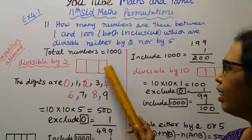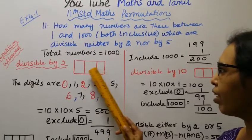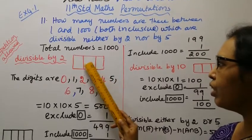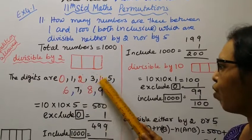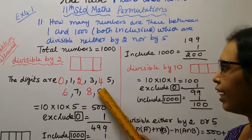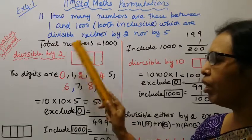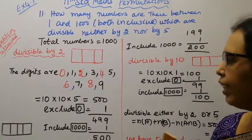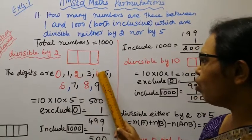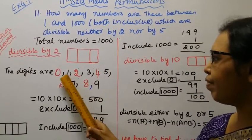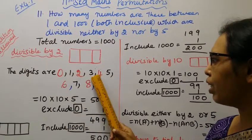Divisible by 2. The digits are 0, 1, 2, 3, 4, 5, 6, 7, 8, 9. Divisible by 2. Ending number is 0, 2, 4, 6, 8. Even numbers. 1, 2, 3, 4, 5.